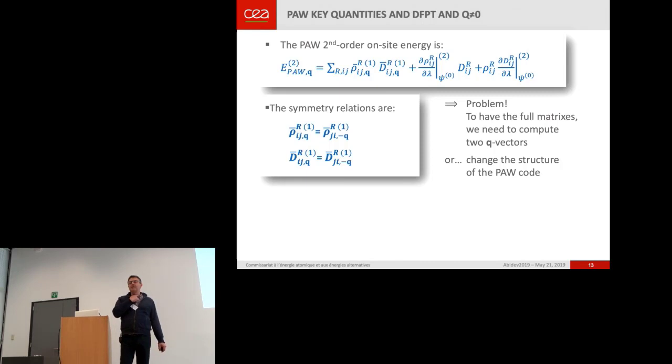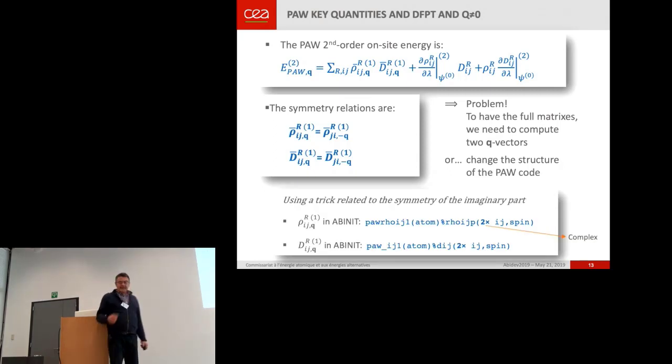So you need to compute two Q vectors, or you need to change all the structure of your code, retrieving the value for one Q from one Q to minus Q. But if I want to do that, I have to change all the PAW routines.